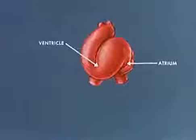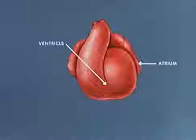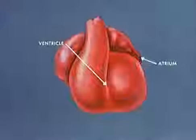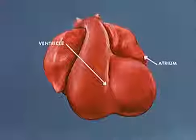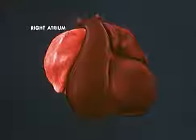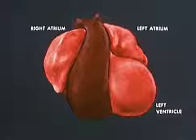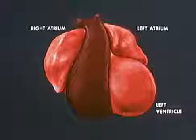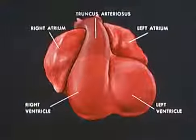As development continues, the ventricular region swings back to the midline and expands and grows in length to cover the atrium and great veins. Extensive sacculations projecting laterally will ultimately become the right atrium and left atrium. The future left ventricle lies to the left of the interventricular groove and the embryonic right ventricular or bulboconus region communicates with the truncus arteriosus.